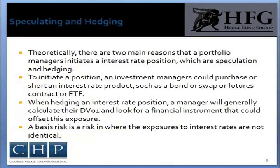Many managers use futures contracts or swaps to offset interest rate exposure. Most hedging cannot be offset completely, which creates a basis exposure to a portfolio. A basis risk is a risk where the exposure to interest rates is not identical. For example, many banks and investors purchased peripheral European interest rate risk during the EU debt crisis. To hedge this exposure, many investors sold German bonds in an effort to offset some of their interest rate exposure. The actual exposure is long one type of interest rate — peripheral yields — and short another — German bonds — or vice versa. Interest rate exposure is a key element to any portfolio, and managers should be cognizant of the effects of interest rates on their portfolios.